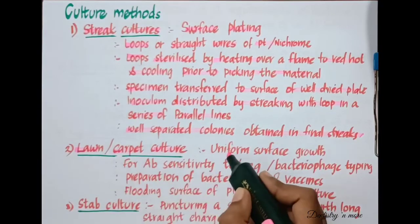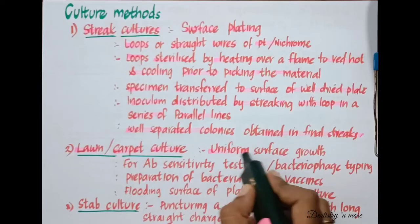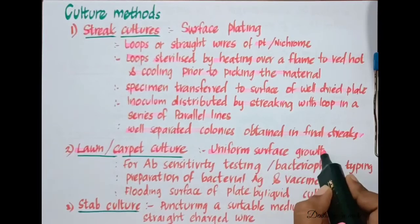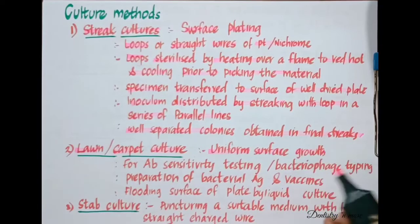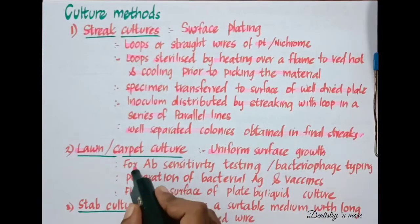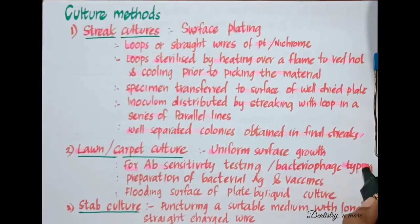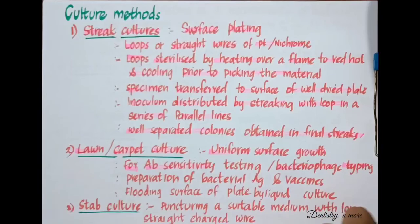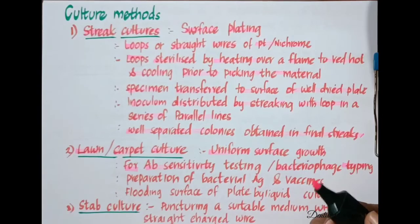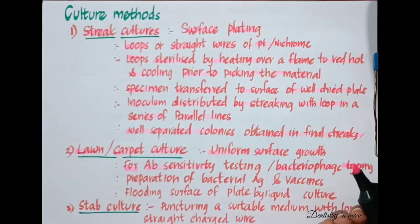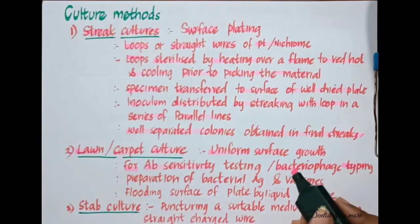The next culture method is lawn culture or carpet culture. Here we can obtain a uniform surface growth of bacteria. We usually use this method for testing antibiotic sensitivity and for bacteriophage typing. It may also be employed whenever we need a large amount of growth, such as for preparation of bacterial antigens and vaccines.